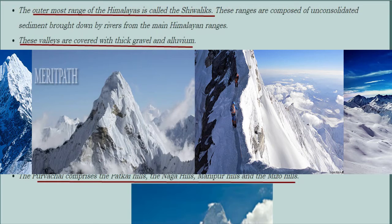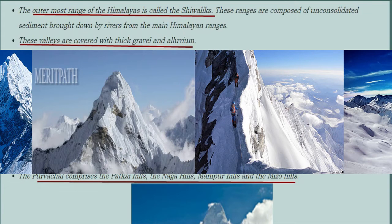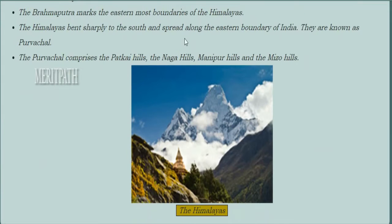The Kali and Tista rivers demarcate the Nepal Himalayas, and the part lying between the Tista and Dihang rivers is known as Assam Himalayas. The Brahmaputra marks the easternmost boundary of the Himalayas. The Himalayas bend sharply to the south and spread along the eastern boundary of India, known as Purvachal, which comprises the Patkai Hills, Naga Hills, Manipur Hills and the Mizo Hills.